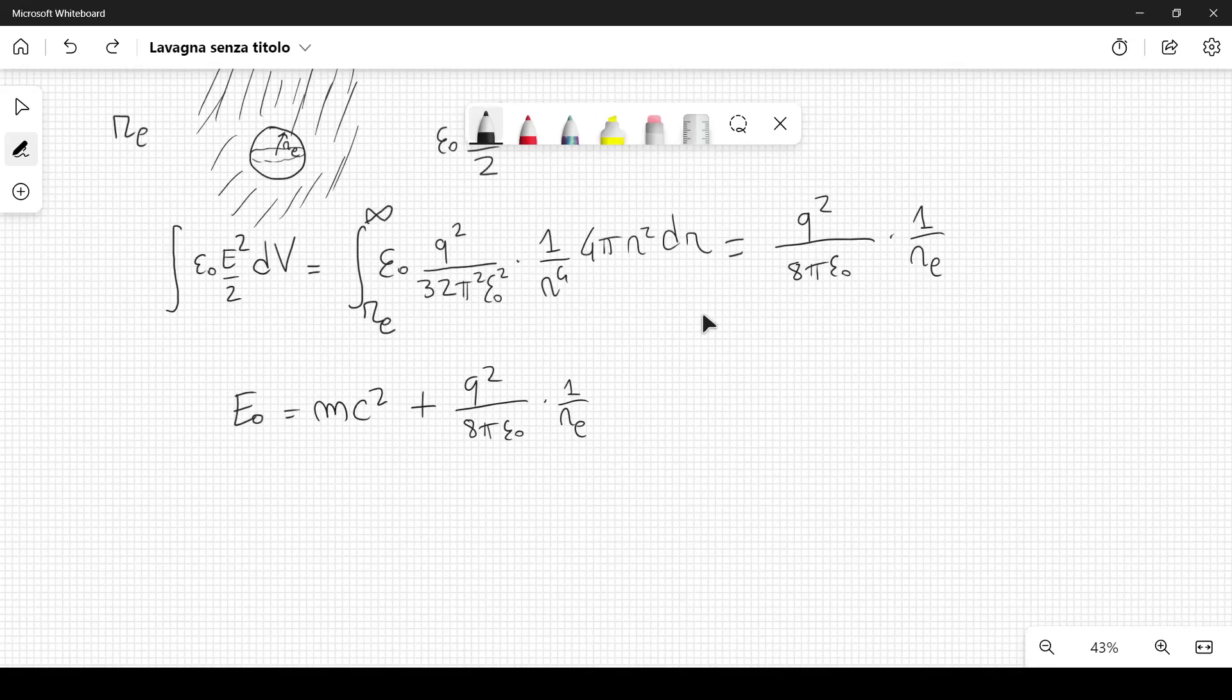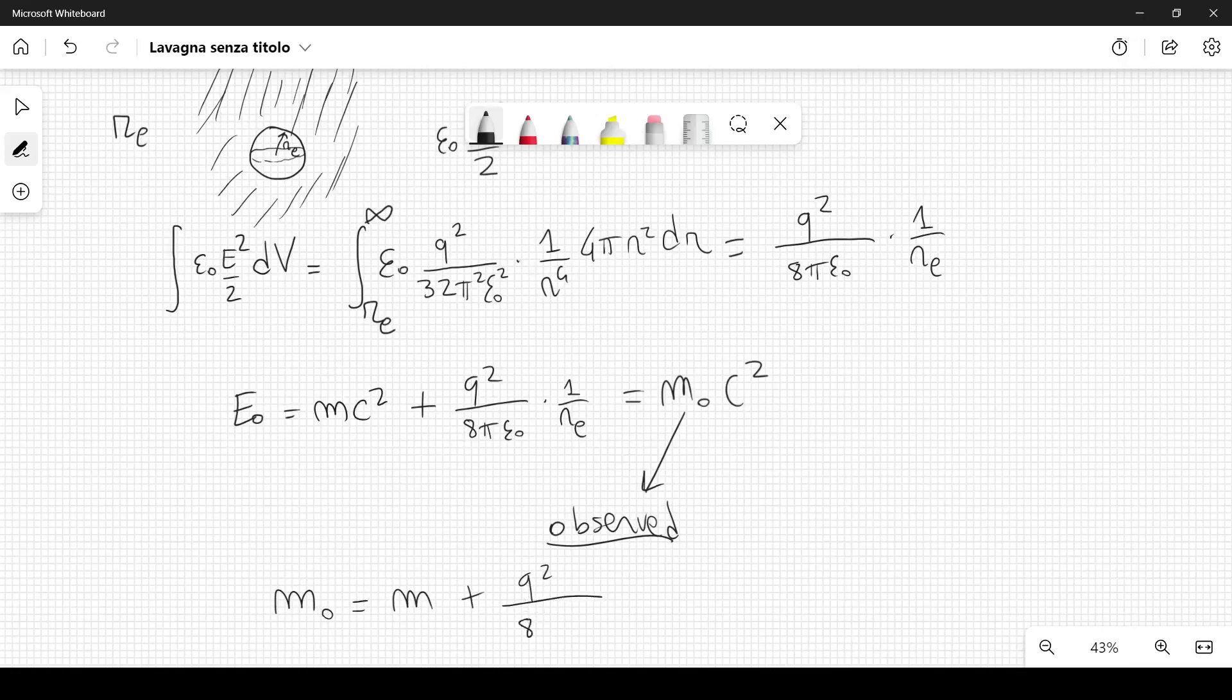Now this energy should equal m0 c squared, where m0 is the observed mass of the particle. This is the observed rest mass, because the particle is at rest. And therefore, the mass m0 should be equal to m plus q squared divided by 8 pi epsilon 0 c squared times 1 over r e.